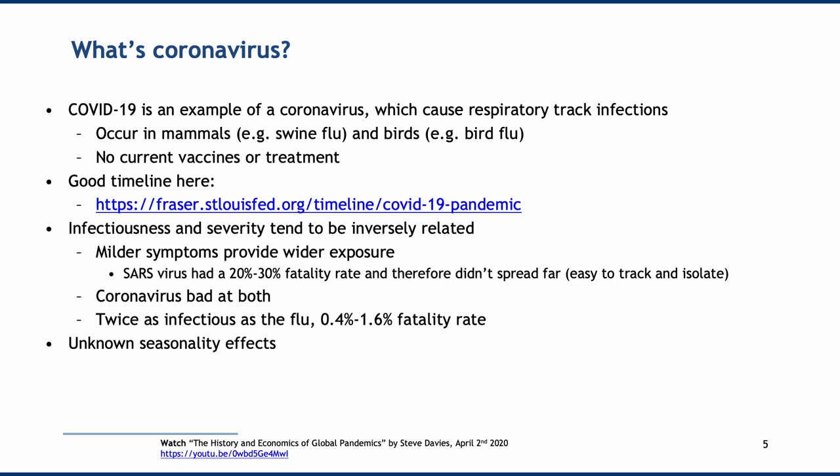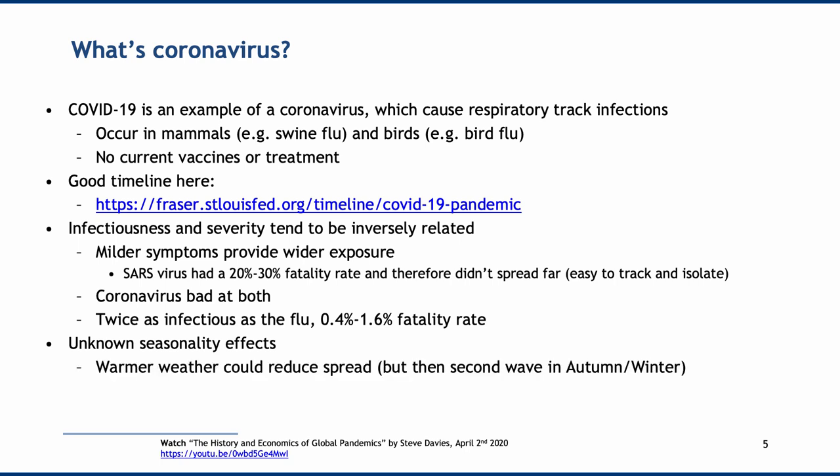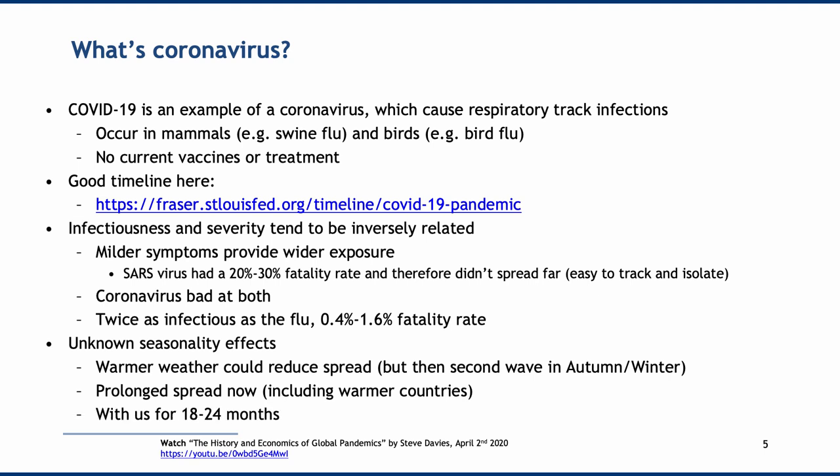Coronavirus looked bad from the beginning because it performed poorly on both metrics. Estimates were that it was twice as infectious as the flu, with a 0.4 to 1.6% fatality rate. There was also unknown seasonality — warmer weather could reduce the spread, but if the summer of 2020 saw a slowdown, that implied a second wave in autumn/winter. Steve Davies suggested COVID would be with us for 18 to 24 months, which was longer than many people were thinking or hoping.